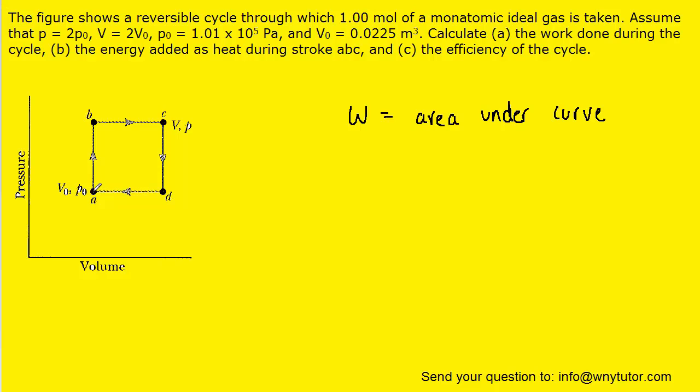Now hopefully we can see that during the process from A to B to C to D and then back to A, the shape that's created is a rectangle. And so it becomes our goal to find the area of this rectangle and that's going to give us the work.